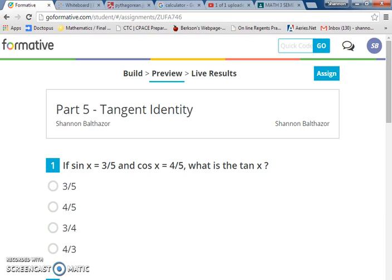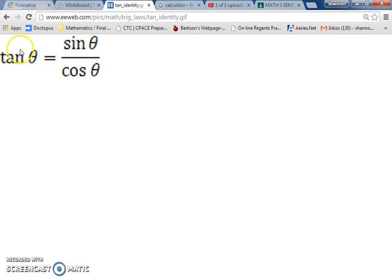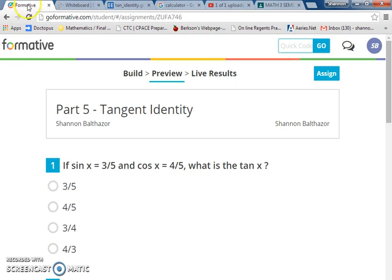In Unit 1 Part 5, the tangent identity, we figured out that the tangent identity was sine of x over cosine of x. So the tangent of an angle is equal to the sine of the angle divided by the cosine of the angle. If we know the sine and the cosine, we can figure out the tangent. So if sine of x is 3/5 and cosine of x is 4/5, what's the tangent of x?